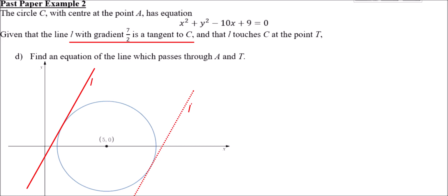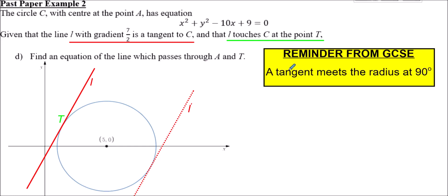We need to remember from GCSE — and this applies at A-level too — that a tangent meets the radius at a 90-degree angle. So from point T to the center, the radius and the tangent are at right angles. As a consequence, a diameter is always sandwiched at either end by two tangents that are parallel to one another.